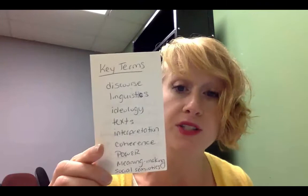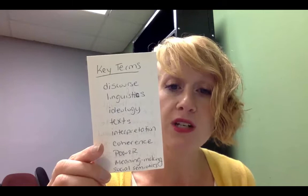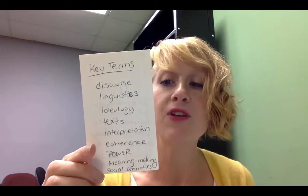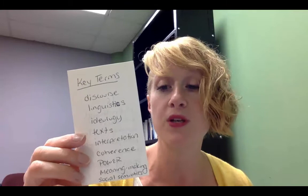Some of the really important key terms that you should be looking at are: discourse, linguistics, ideology, text, interpretation, coherence, power, meaning-making, and social semiotics. Even though we're not going to summarize that introduction, we should understand the terms so that we can enter the conversation. If you have any trouble with any of these terms, make sure that you ask your peers, ask me, or ask somebody in the writing center in order to help you understand these key terms and these modes that he's discussing in his text.